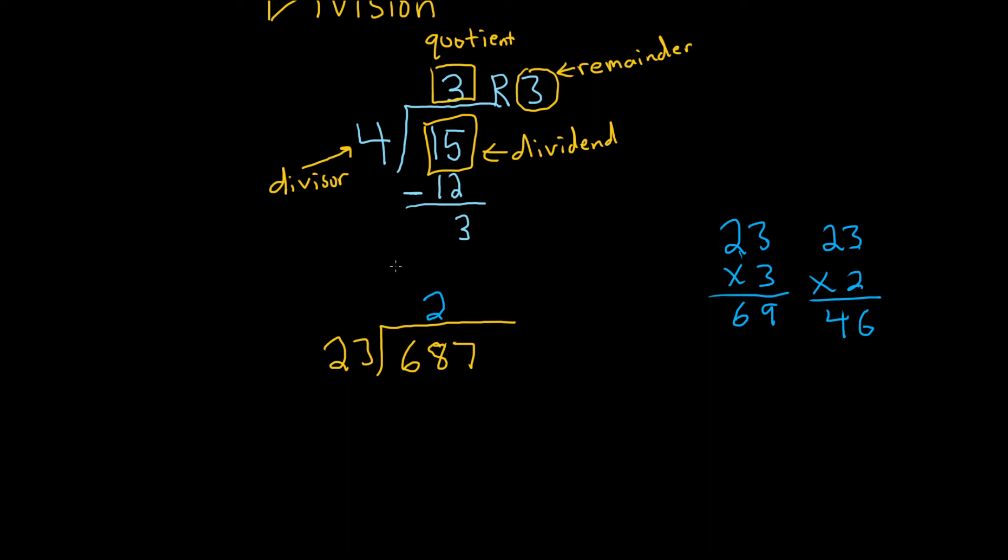Then you perform the multiplication. So 2 times 23, we know that's 46, because we did it on the side. You put a minus sign and you subtract, so you get 2 and 2, and then you bring down the 7.